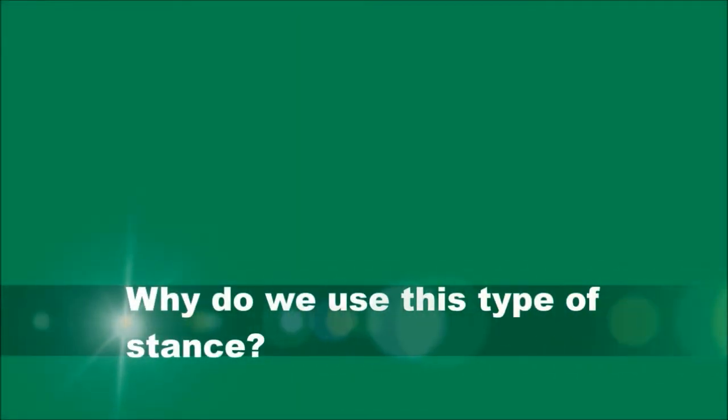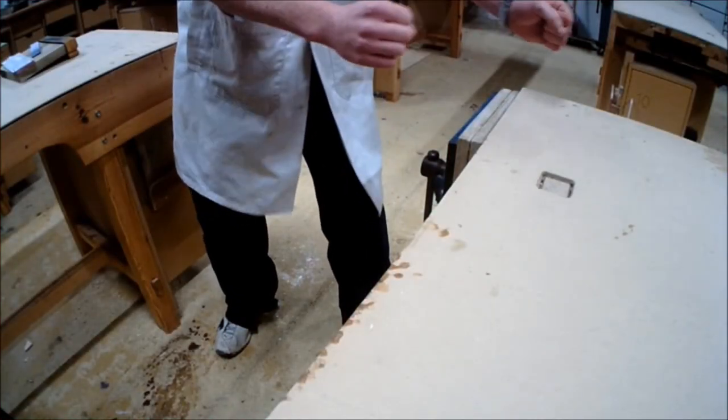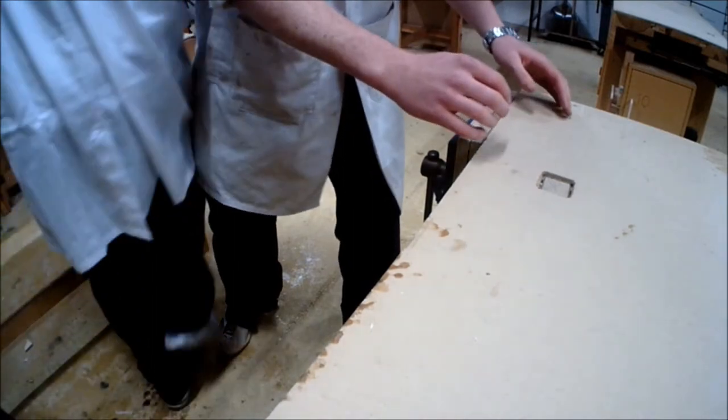Why do we use a boxing stance when sawing? Boxing stance is a wider stance where you have your feet further apart. This allows you to have more control and balance over your body.